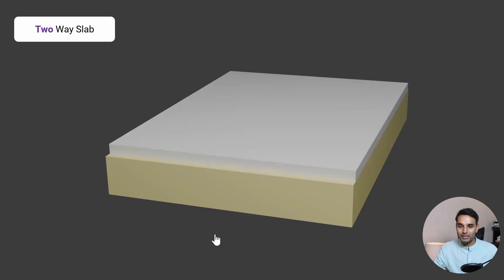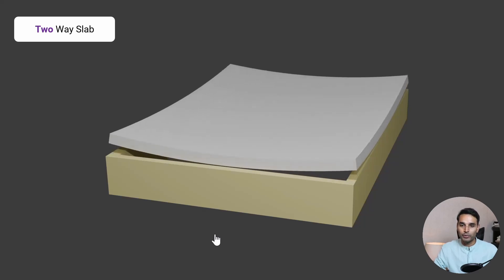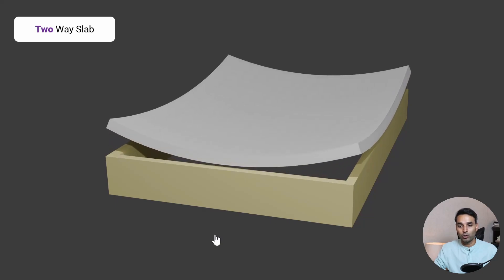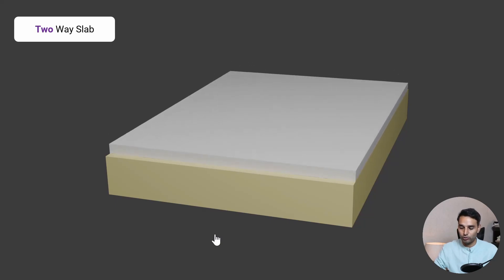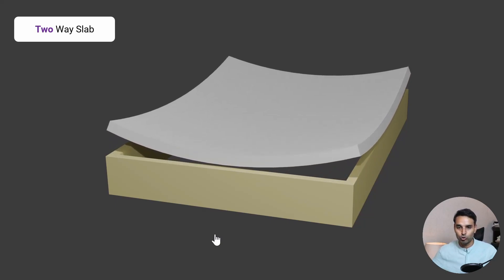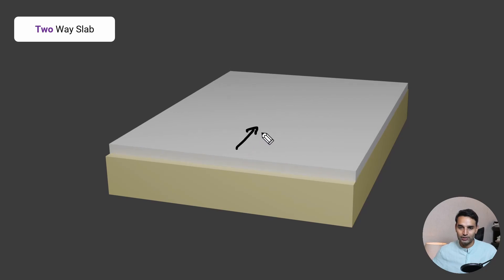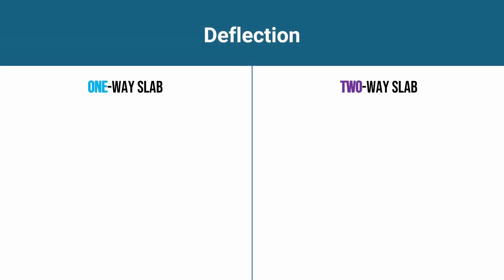Compare this to a two-way slab where it is supported on all four sides — the deflection is going to be along both directions, along the x direction and along the y direction. Now, having gone through the animation and understanding how the slab deflects, let's understand the deflection behavior itself.